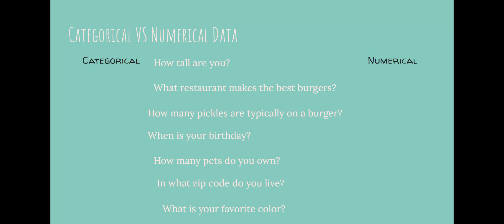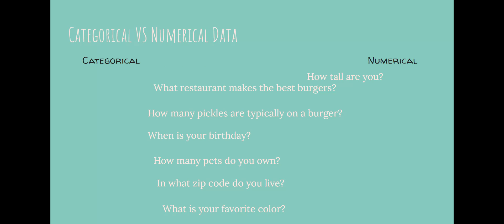All right, let's get some practice in. For each of these questions you're going to tell me: is it categorical or numerical? So how tall are you? Is that categorical data or numerical data? Do we answer with words or numbers? That is numerical data. If I ask you your height, you're going to tell me I'm six feet tall, I'm five feet tall — whatever it is, it's a number.